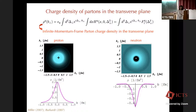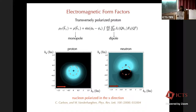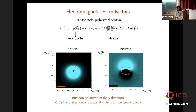This is for unpolarized quark and unpolarized nucleon. We can now consider the case of a transversely polarized nucleon. In this case, we have a contribution from the other form factor F2. We have a monopole distribution on top of which we have a dipole shape given in terms of the Pauli form factor F2. Why do we have this distortion? With a nucleon polarized in the x-direction, spin in the x-direction means a dipole magnetic field in that direction.